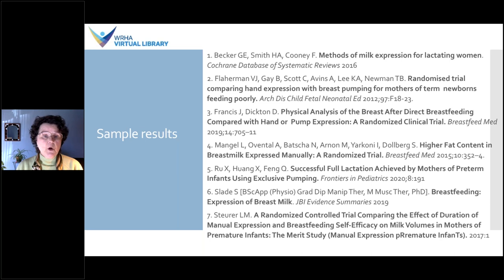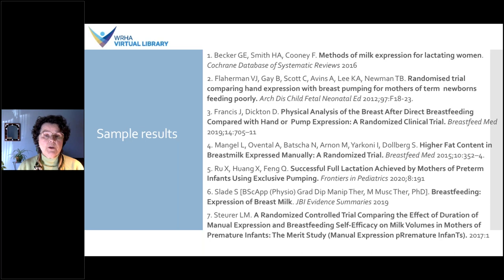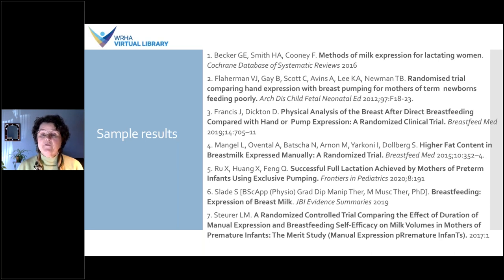The next step would be to continue on with other databases such as CINAHL, Joanna Briggs Institute — an evidence-based nursing database — or the Cochrane database. You would need to review your terms, make sure subject headings possibly change with different databases, and check your truncation and proximity rules for each database by looking in the Help section.